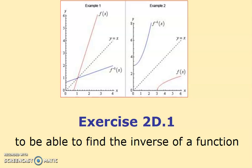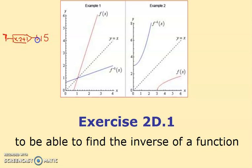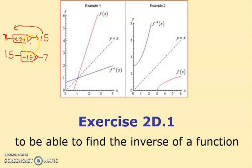This is exercise 2d.1: how to find the inverse of a function. We've already seen how to find inverses at primary school — if you had a function box that multiplied any input by 2 and added 1, you might put in 7, get 15, and the inverse function takes you back: take away 1 then divide by 2. So 15 minus 1 is 14, divide by 2 is 7.